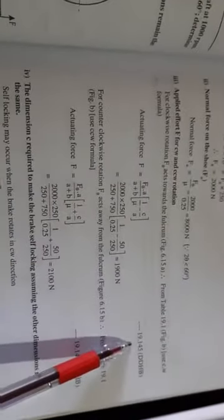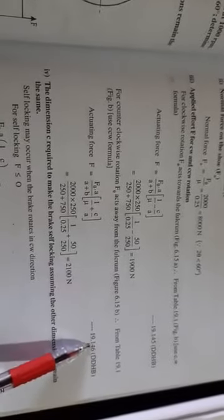So for second case of block brake, we have to refer the equation number 19.1 for finding the tangential force. So you have to use F equals Ft times A plus B times 1 by mu minus C by A for clockwise rotation, and for counterclockwise rotation, same formula with the plus sign.